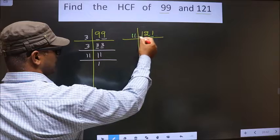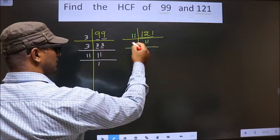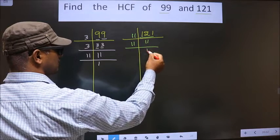So that is 11 times 11 is 121. Now here we got 11. 11 is a prime number, so 11 times 1 is 11.